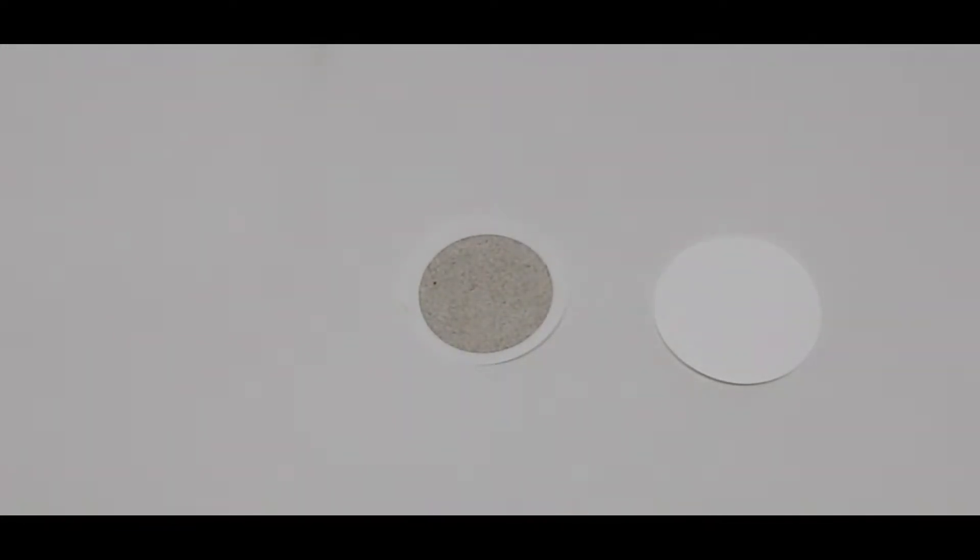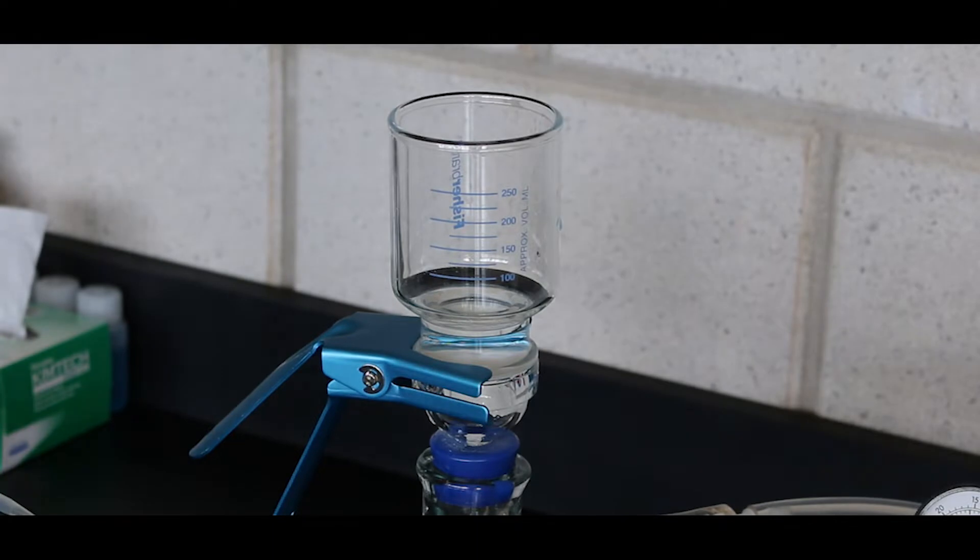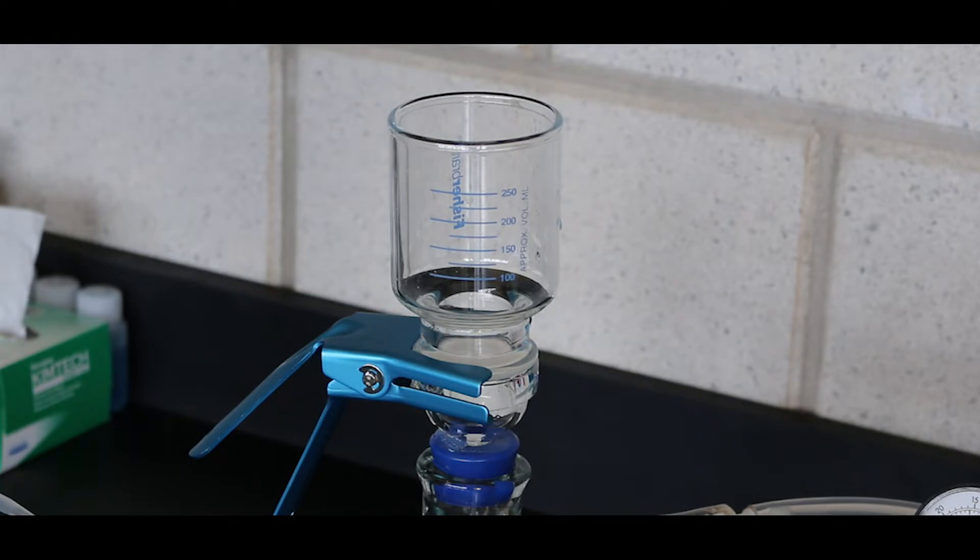Color may be expressed as either apparent or true. Apparent color is the color of water that is unfiltered. True color is the color of water from which suspended matter has been removed by filtration.